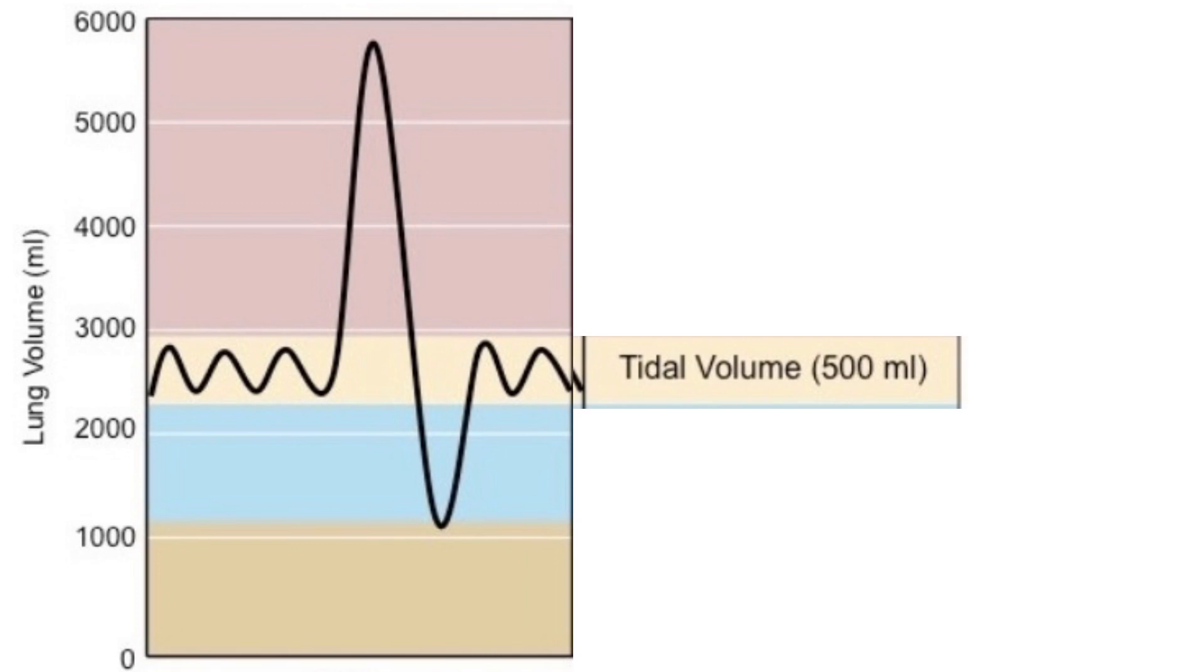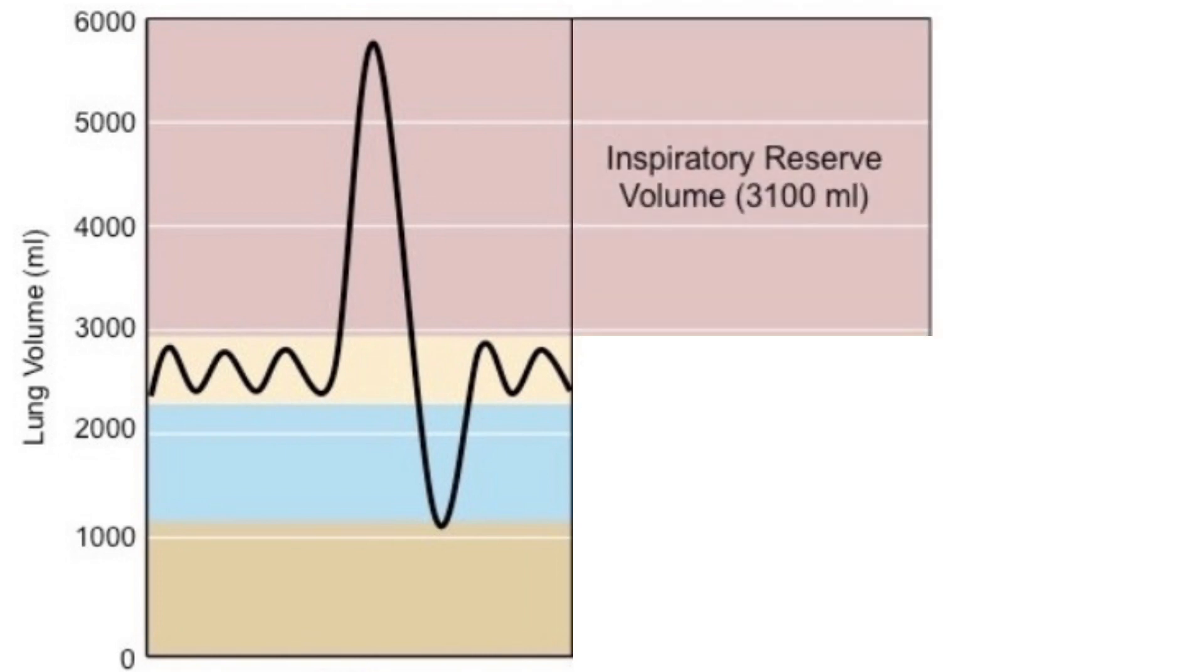But our lungs have more capacity than just this. When we need to take a deep breath, we can tap into the inspiratory reserve volume, IRV, which allows us to forcefully inhale an additional 3,100 milliliters of air after a normal inhalation.